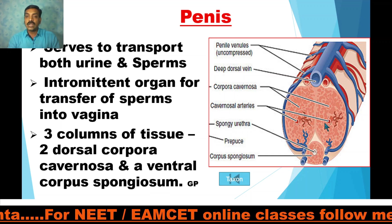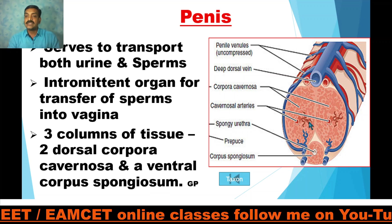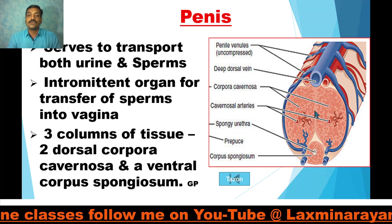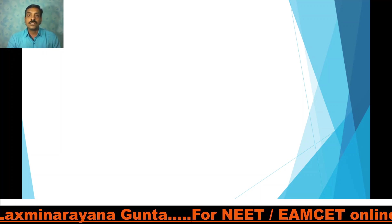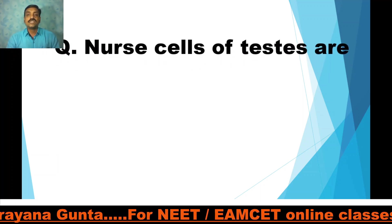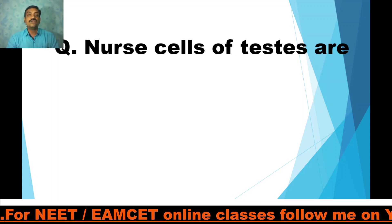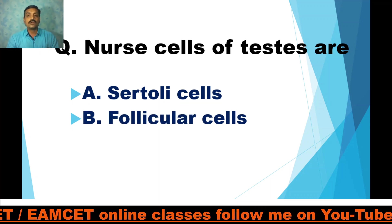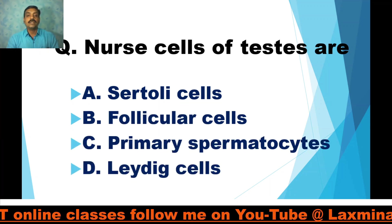The corpora cavernosa are helpful for the erection of the penis. A quick review question: which cells in the testis are the Sertoli cells, follicular cells, primary spermatocytes, and Leydig cells? Vasa efferentia from the testis leads to — cauda epididymis, rete testis, or caput epididymis? The correct answer is caput epididymis.